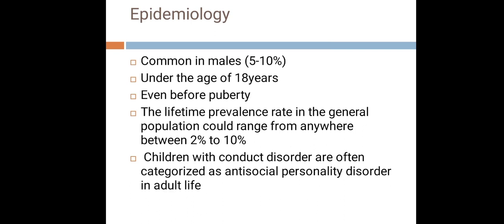Regarding epidemiology, conduct disorder is more common in males and is diagnosed under the age of 18 years, even before puberty. The lifetime prevalence in the general population ranges from 2% to 10%. Children with conduct disorder are often categorized as antisocial personality disorder in adult life if the condition persists after age 18.